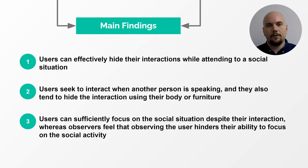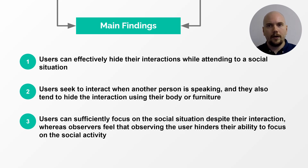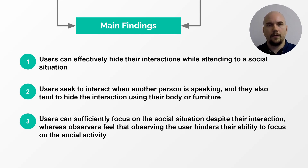Despite significant differences between the interaction techniques and the evaluated scenarios, we acquired remarkably similar results from both studies. First, users were highly successful in hiding the interaction from the observer — only a fraction of the interactions were noticed, and only when observers had some degree of prior knowledge. Second, users generally sought to identify ideal moments to interact with their device to cause as little disruption as possible. They typically interacted when someone else was speaking so that the focus was less on them. Moreover, users typically attempted to hide their interaction using their body or furniture.